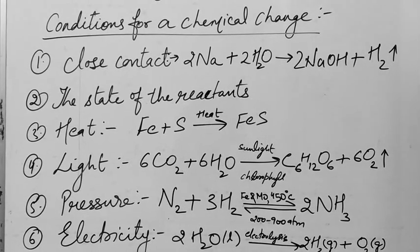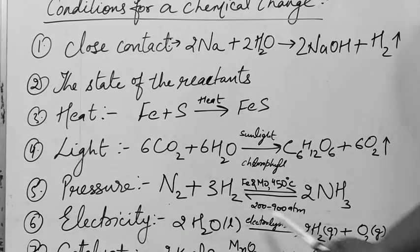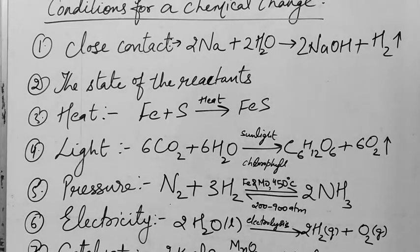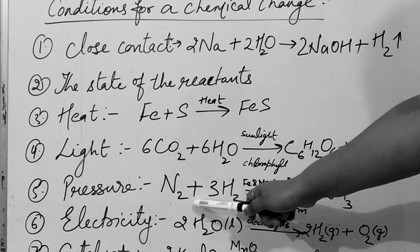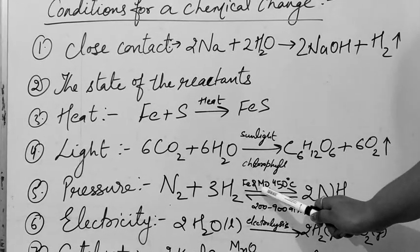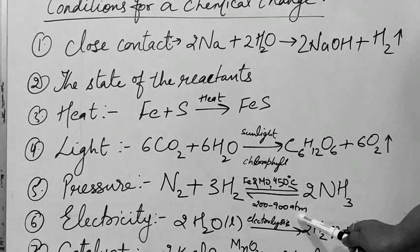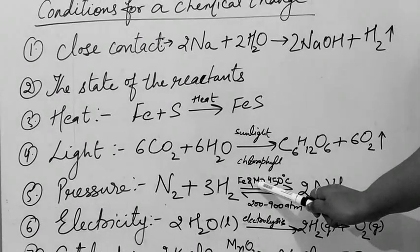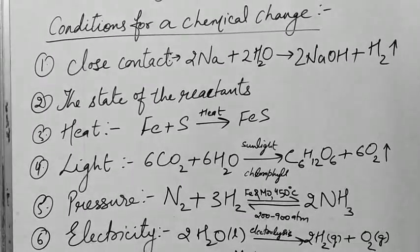Next is pressure. Some reactions need high pressure so that the reactants get mixed, gets reacted with each other. This is a very important reaction. You have to study it very carefully. You will get this in physics also. It is the reaction for the formation of ammonia. NH3 is ammonia. Nitrogen plus 3H2 in the presence of this is the atmospheric pressure, 200 to 900 atm means atmospheric pressure. What is Fe? Iron. Mo Molybdenum. These are the catalyst and promoter. I will explain you that. These are the catalyst and promoter.